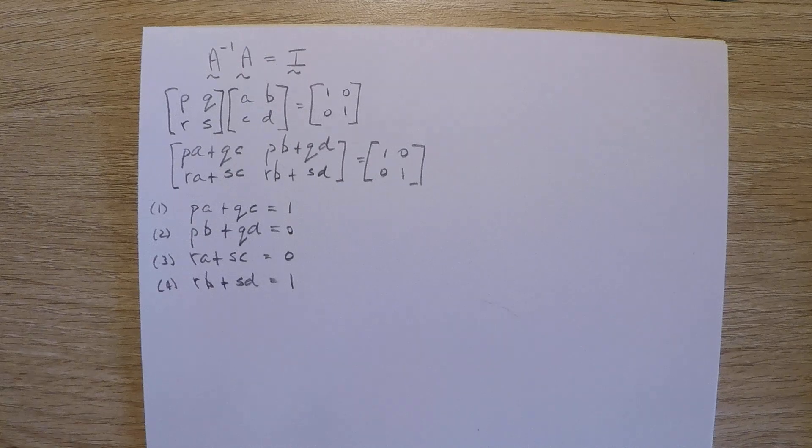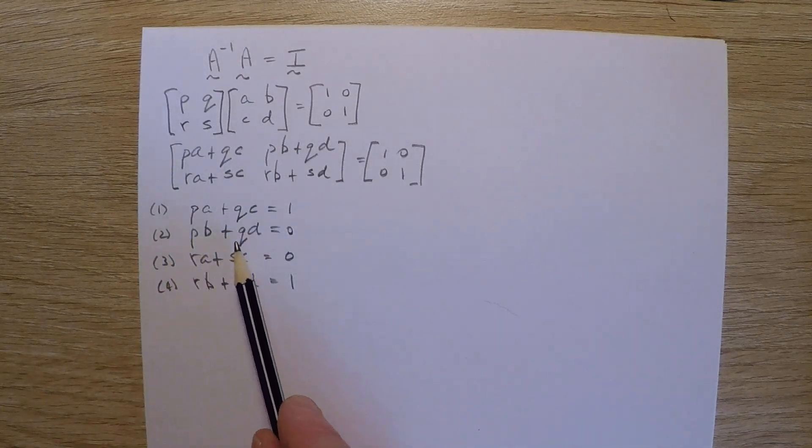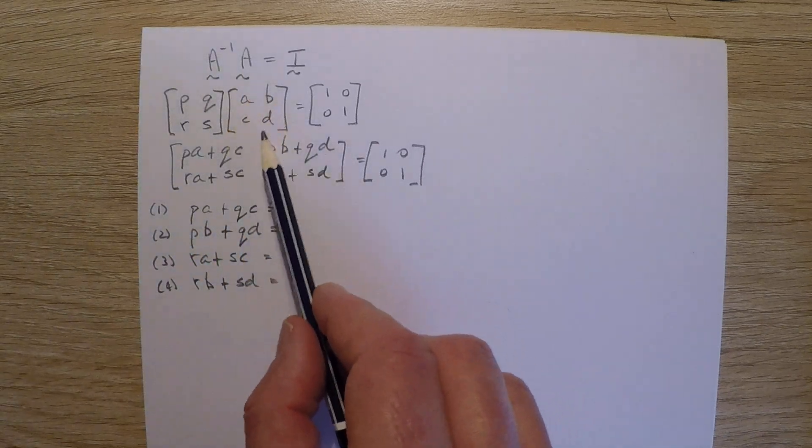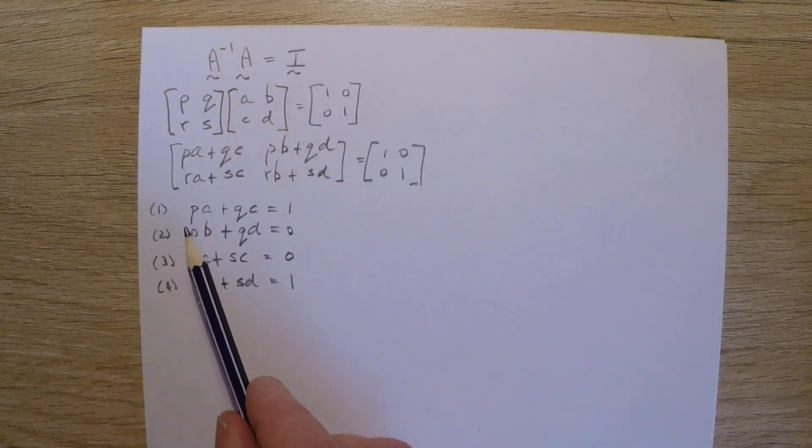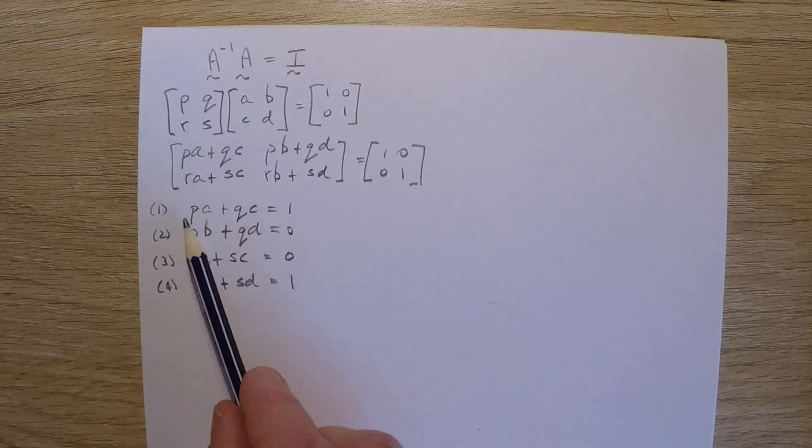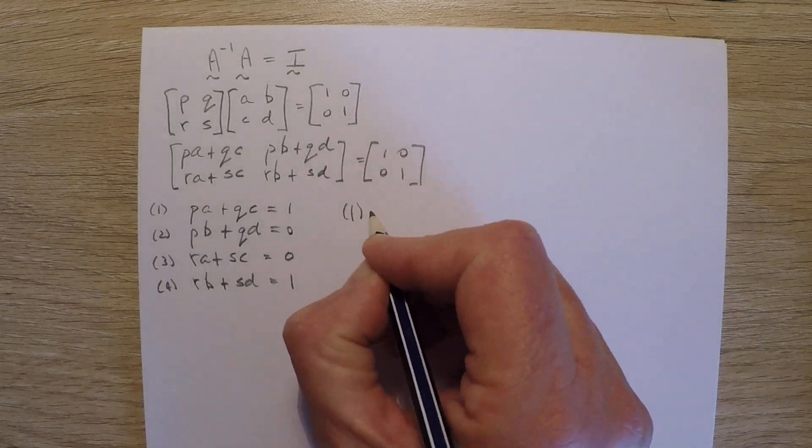Now how do I go about solving these? Well, let's look at the first two equations. We have P and Q. A, B, C and D are given values, so we're trying to solve for P, Q, R and S.